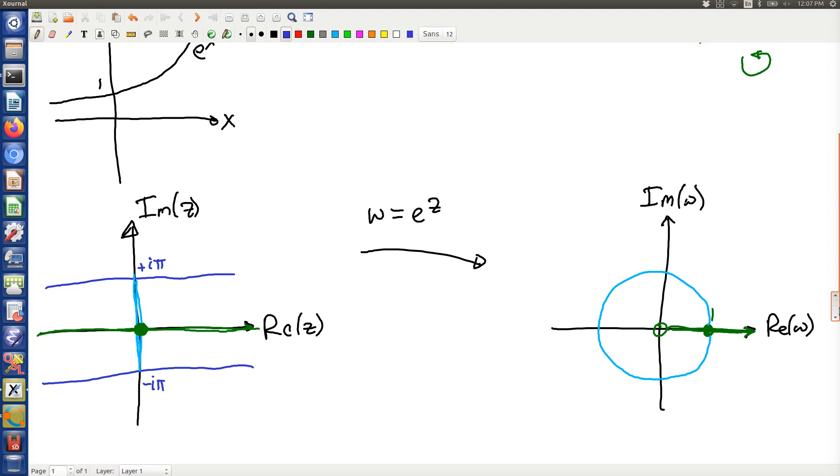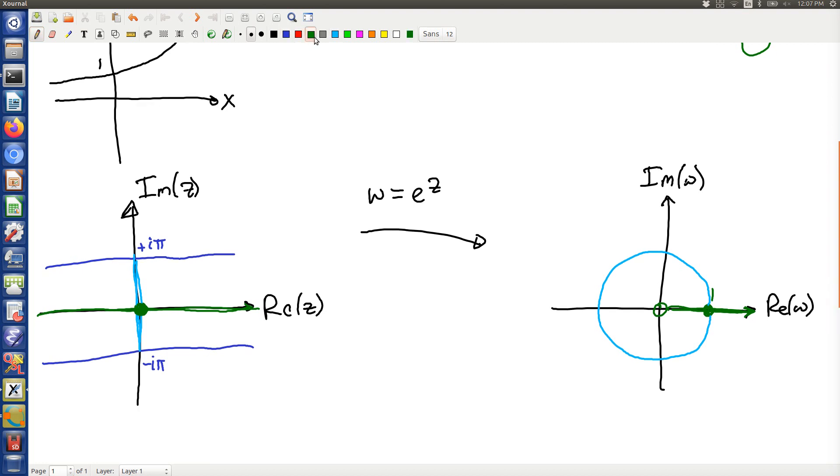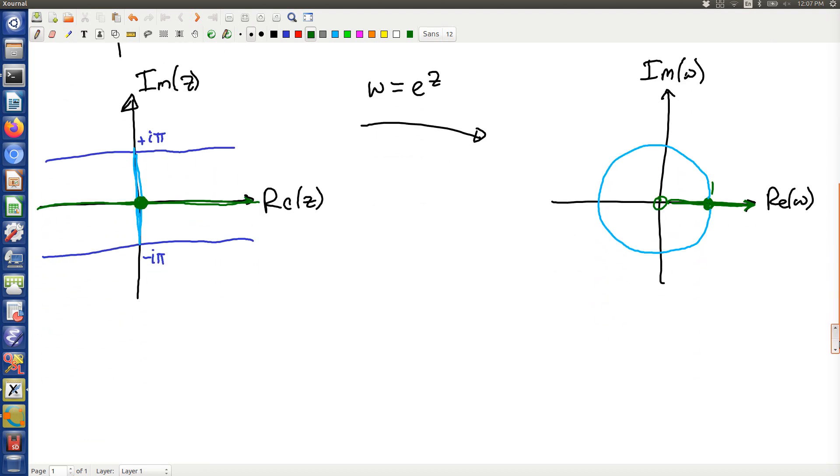First fact is the real axis maps to positive reals. Imaginary axis maps to the unit circle.